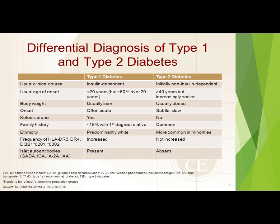Differentiating type 1 from type 2: think of type 1 as coming first — patients are younger, typically under 20, usually lean, ketosis-prone, and it's an autoimmune type of diabetes. You'll see abnormally sky-high blood sugars at specific draw times. Type 1 predominantly affects Caucasians.